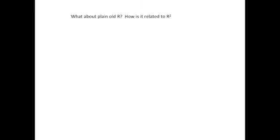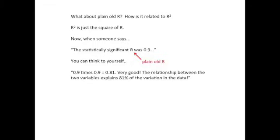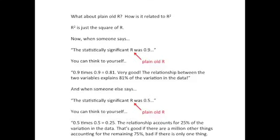What about plain old R? How is it related to R squared? R squared is just the square of R. Now, when someone says, the statistically significant R was 0.9, and we're talking about just plain old R, you can think to yourself, 0.9 times 0.9 equals 0.81. Very good. The relationship between the two variables explains 81% of the variation in the data. And when someone else says, the statistically significant R, that's plain old R, was 0.5, you can think to yourself, 0.5 times 0.5 equals 0.25. The relationship accounts for 25% of the variation in the data. That's good if there are a million other things accounting for the remaining 75%, and bad if there's only one thing.